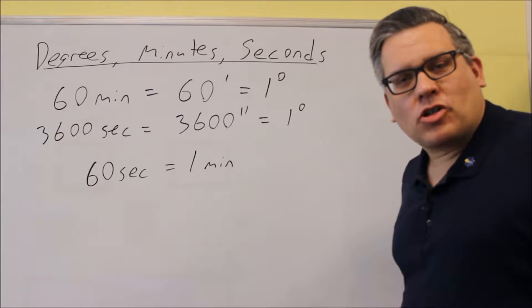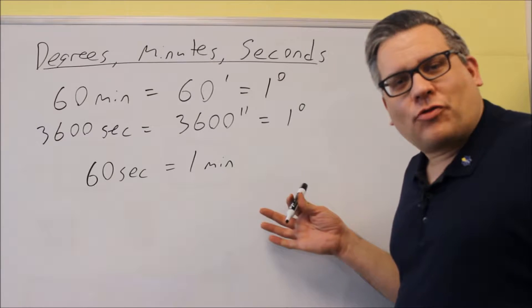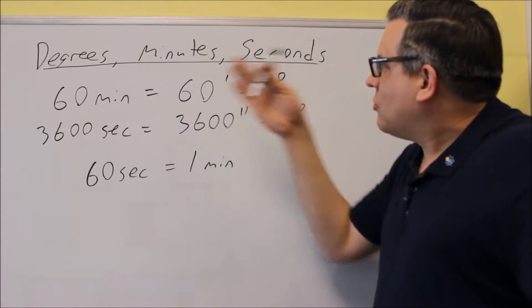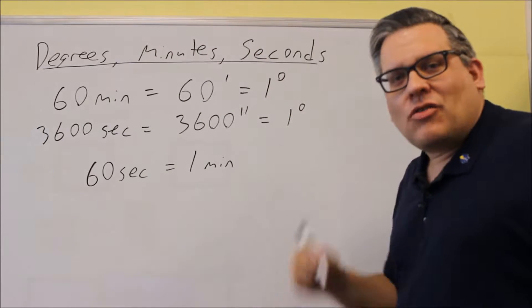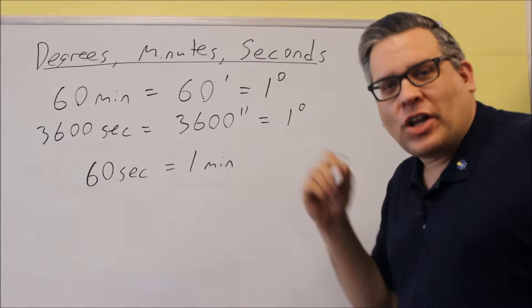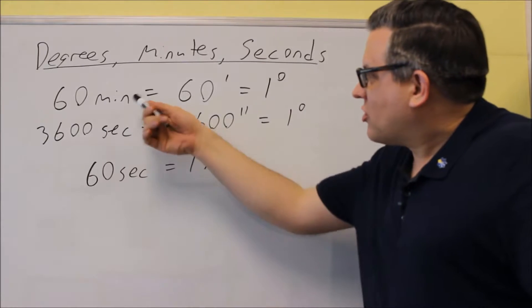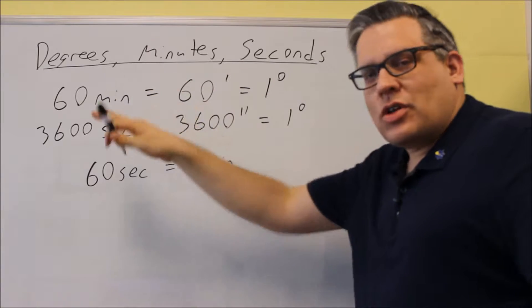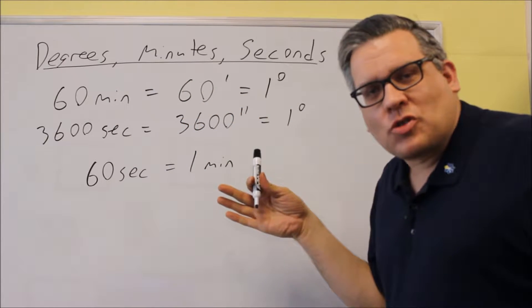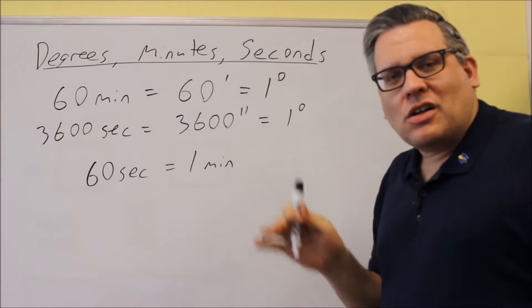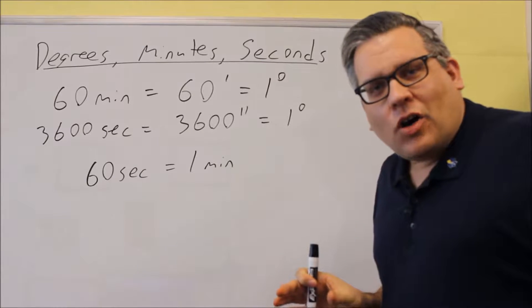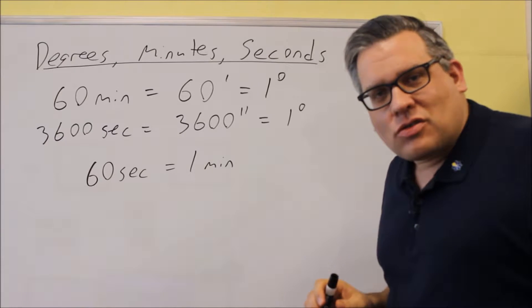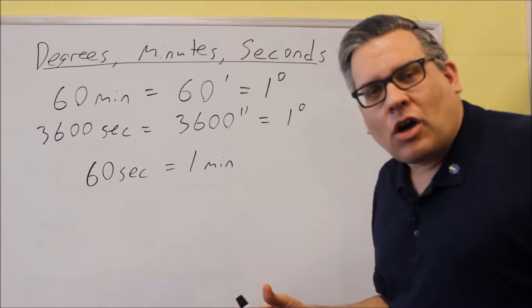We've already talked about degree measurement as a measurement for angles. Degrees can also be represented as degrees, minutes, and seconds. In fact, even still today, for navigation, we're still seeing things written in degrees, minutes, and seconds. Here are some conversions — basically taking the decimal part of an angle and turning it into minutes and seconds, which you often see with navigation.